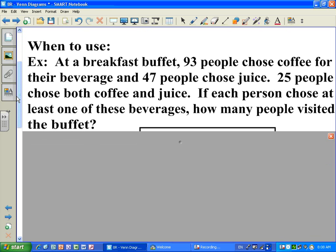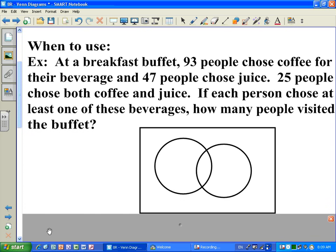If you look at this, you'd think right off the bat that there might be three categories here: coffee, juice, and then the people who chose both. Well, Venn diagrams have a unique way of displaying that information with only using two circles, with the both category being where the two circles would overlap.